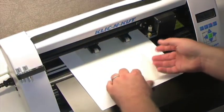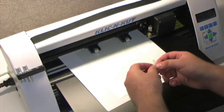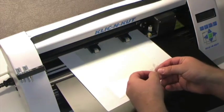Once your design has finished cutting, simply peel it off the mat. Make sure to pop out any excess pieces before applying it to the block.